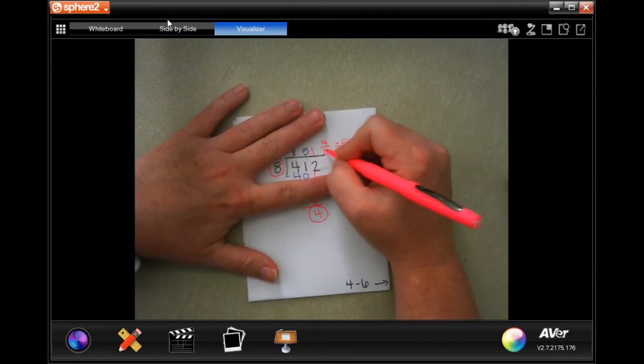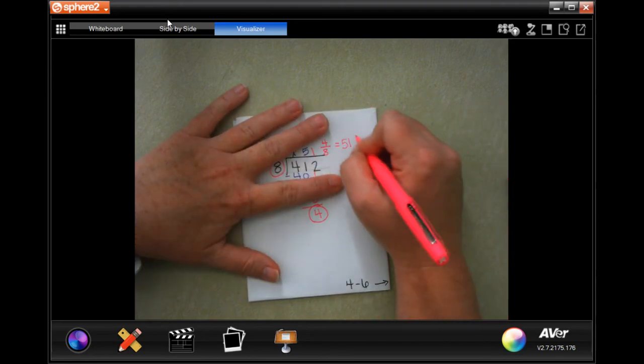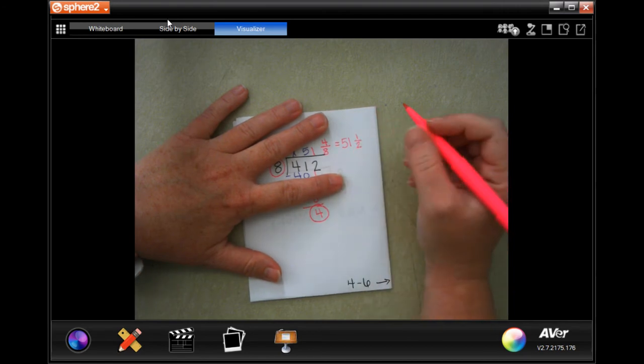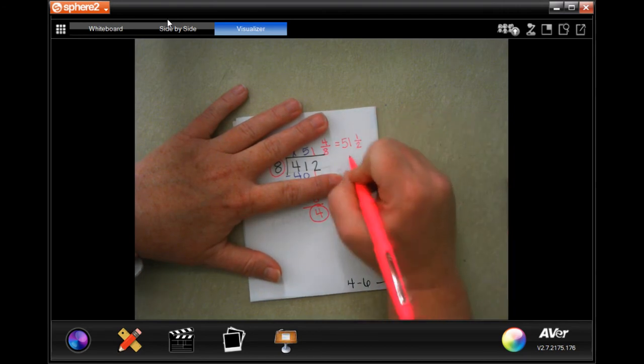So, we're still going to have 51. That's not going to go anywhere. But 4 over 8, 4 goes into 4 once and 4 goes into 8 twice. So, 51 and a half centerpieces.